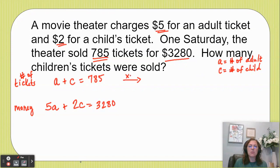In order to do that, I'm going to multiply that first equation by negative 2. That means I'm going to multiply every single thing in this first equation by a negative 2. So a times negative 2 is negative 2a, c times negative 2 is negative 2c, and 785 times negative 2, I'm going to use my calculator, no shame in that, negative 2 times 785 gives me negative 1570.